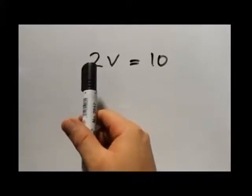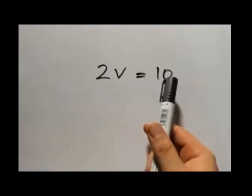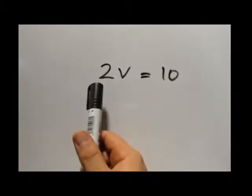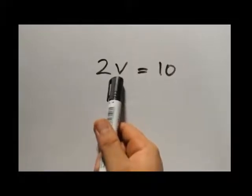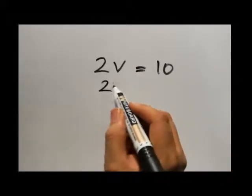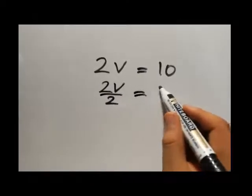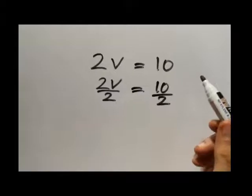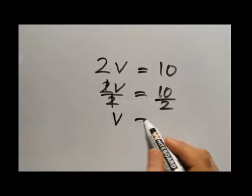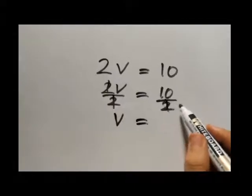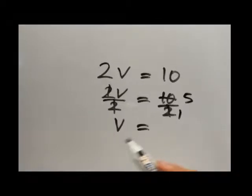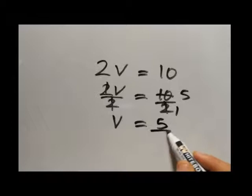Our third problem is 2v equal to 10. The coefficient of v is 2. We divide both sides by 2: 2v over 2 equals 10 over 2. 2 cancels 2, leaving v equal to 10 divided by 2. 2 divided into 10 gives 5. So v equals 5 as the final answer.